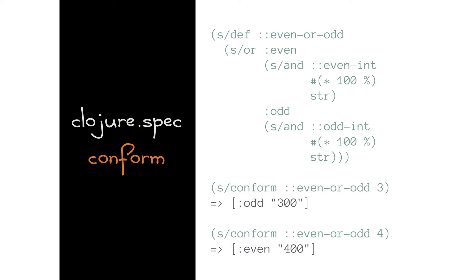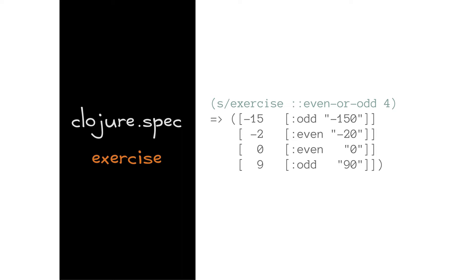If we just had this we would have a pretty awesome validation library. But if the program knows about the data shape, why do we need to generate data when it can generate it for us? `exercise` basically takes a specification and an optional argument of how many times to generate data. The left side is the generated input data and the right side is the actual conformed/transformed data.